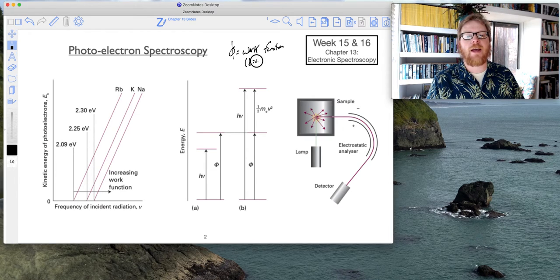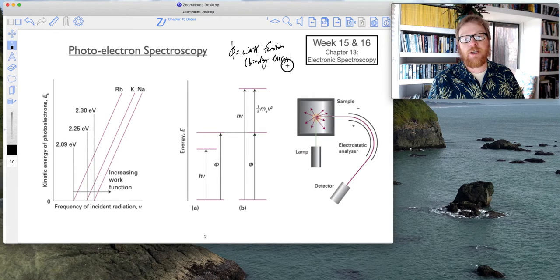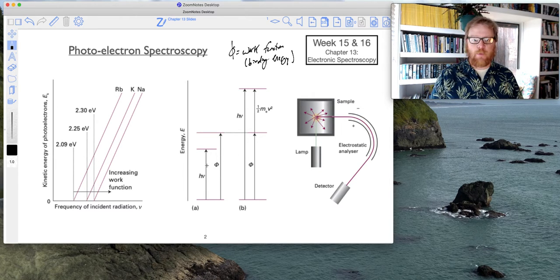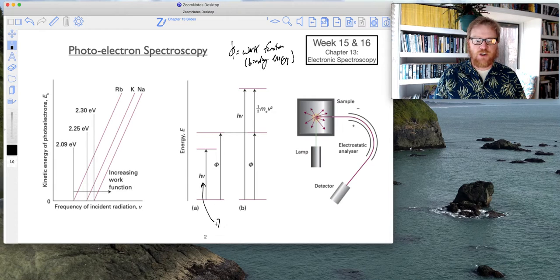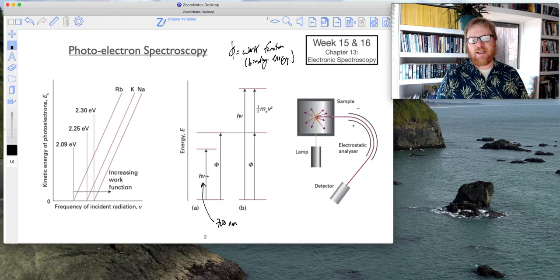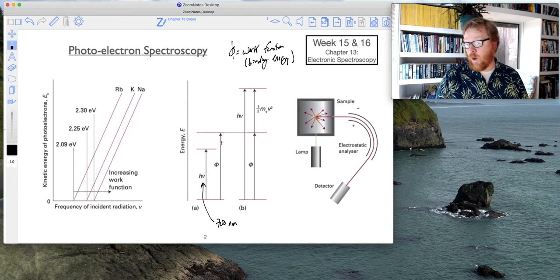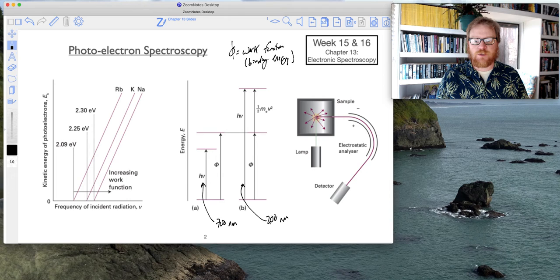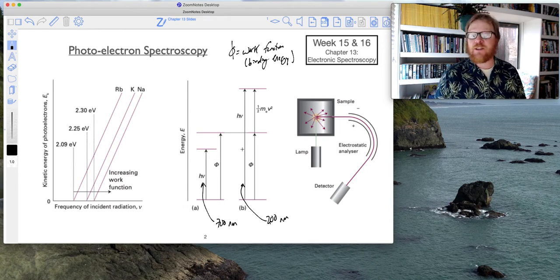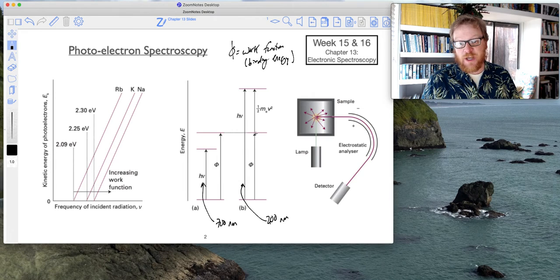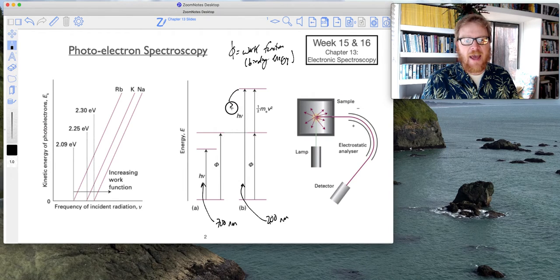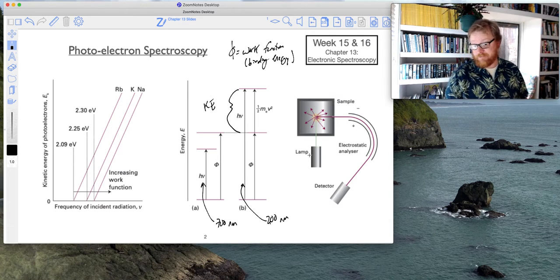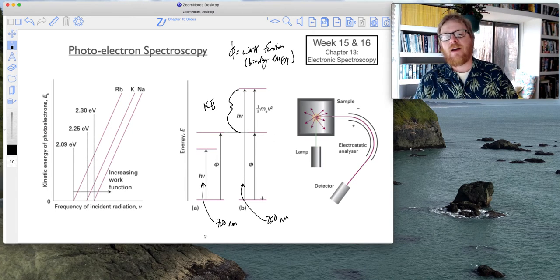Sometimes this is also referred to as the binding energy because it's the energy required to remove an electron. This is showing you that example I just showed where if we suppose h nu is 700 nanometers, you can see that's not enough energy to match the work function. However, if this h nu were 200 nanometers, assuming the same potassium example, you can see that 200 nanometers will be more than enough to induce photoionization. The excess energy will result in the kinetic energy of the electron.